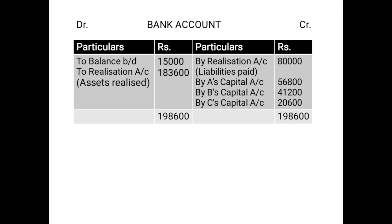Now the bank account. On the debit side: opening balance 15,000, and to realization account (assets realized) 1,83,600. On the credit side: by realization (liabilities paid) 80,000; by A's capital (final payment) 56,800; by B's capital (final payment) 41,200; by C's capital (final payment) 20,600. After doing this, the bank account automatically tallied — there is no surplus left, so nothing else will be distributed among the partners. The bank account is now closed.